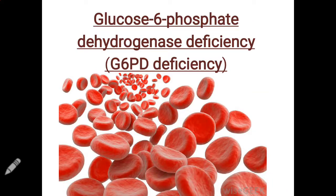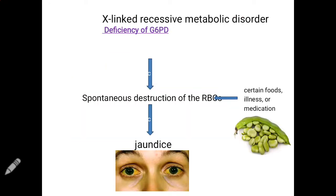Today we are going to study about glucose-6-phosphate dehydrogenase (G6PD) deficiency. It is an X-linked recessive metabolic disorder where there is deficiency of G6PD. When certain triggers are present — like certain foods such as fava beans (shown in the figure), certain infections, or certain medications — these triggers lead to spontaneous destruction of RBCs, causing excessive hemolysis, which ultimately presents as jaundice.